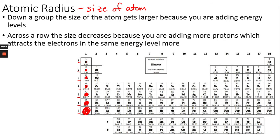As you go across a period — say row two or the second energy level — every time you add another electron you're also adding another proton, and so the atom gets smaller as you go across because the attraction between positive and negative is increasing, pulling the atom in smaller.